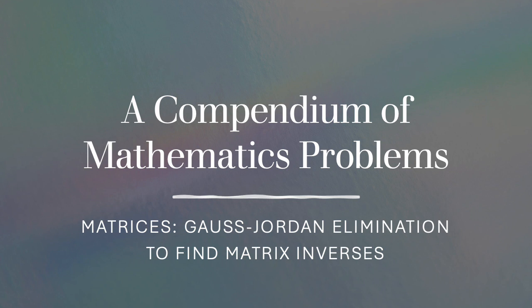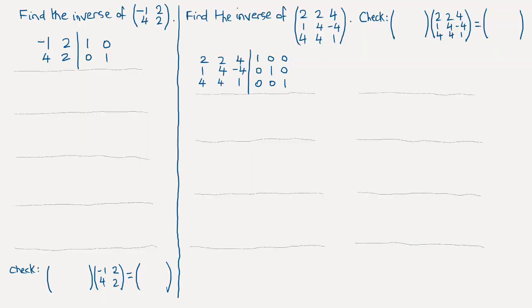In this video I'll go through a couple of examples where I use Gauss-Jordan elimination to find matrix inverses — first for a 2x2 matrix and then for a 3x3 matrix. It's instructive to start with the 2x2 example because it's easier to use Gauss-Jordan to find the inverse of a 3x3 matrix than to use adjoints and all that kind of thing.